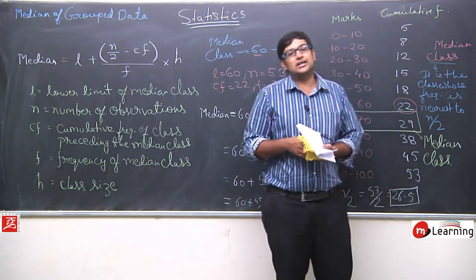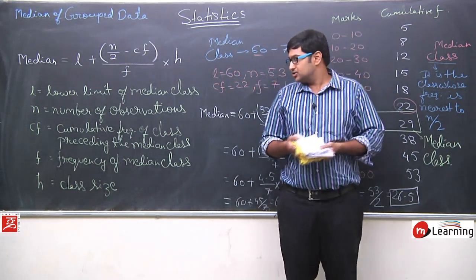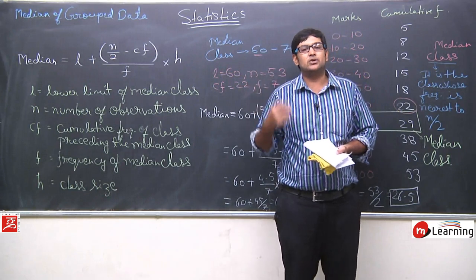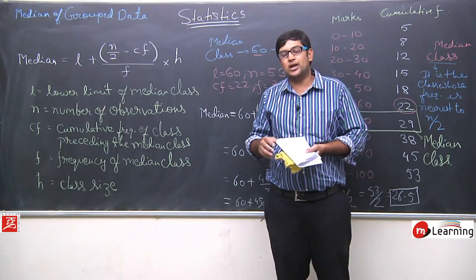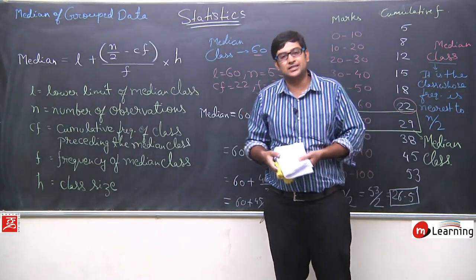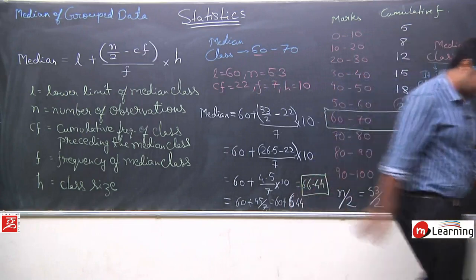So the median is the central tendency of any given data and we have applied this concept to grouped data. Quick recap: make a cumulative frequency table using the less than type table, calculate n by 2, determine the median class, then apply the formula. Our final answer is 66.44. We will see more examples for typical cases as well.